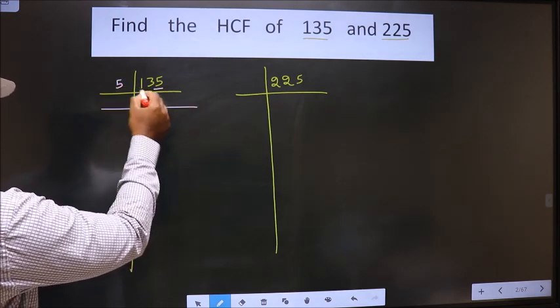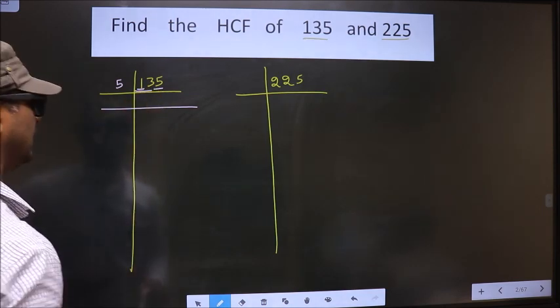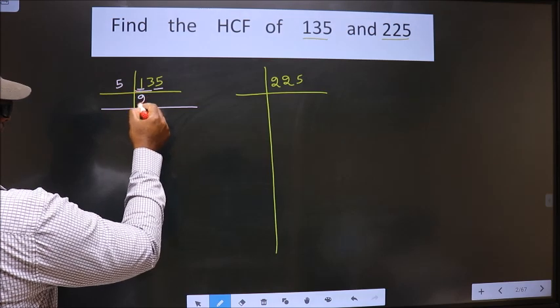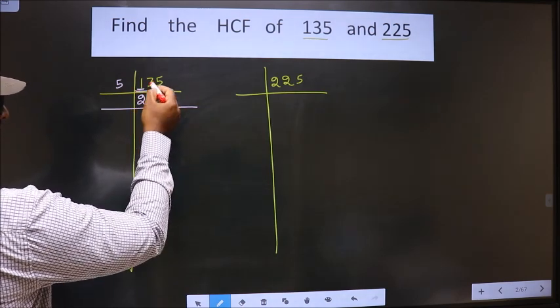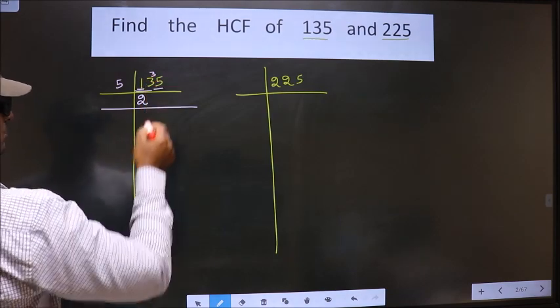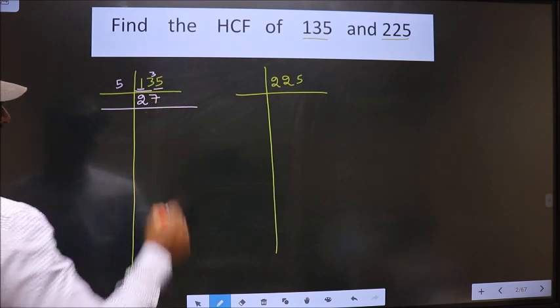13 minus 10 is 3. 3 carried forward making it 35. Now, when do we get 35 in the 5 table? 5 times 7 is 35.